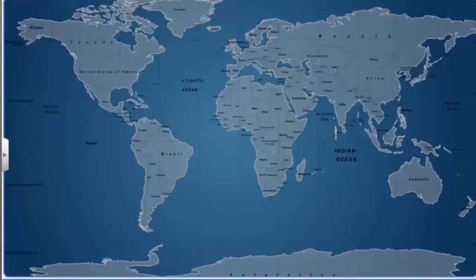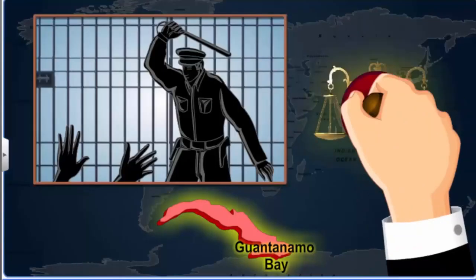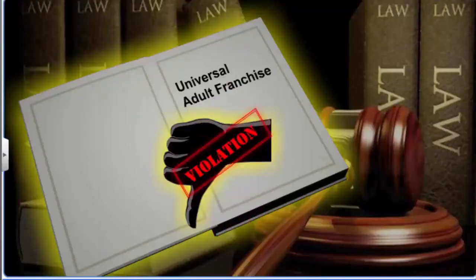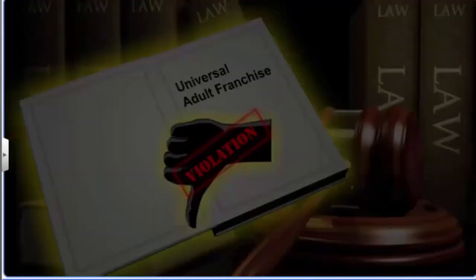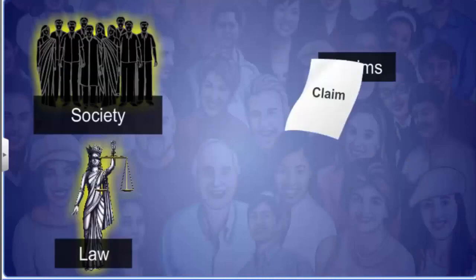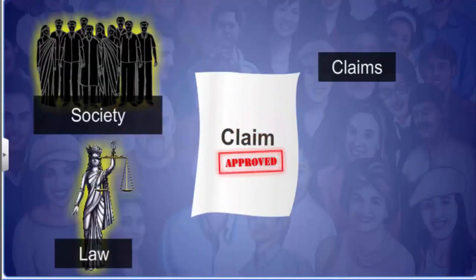This is why the moral claim of not torturing or humiliating prisoners in the Guantanamo Bay could not be enforced. Disrespect of these rights is considered a violation or infringement of our rights. On violation of rights, citizens can approach a court of law to protect their rights. Therefore, claims need to be reasonable, recognized by society, and sanctioned by law.